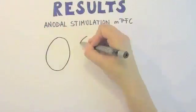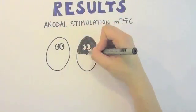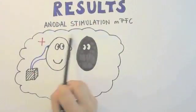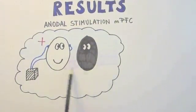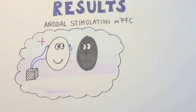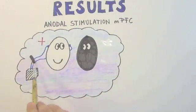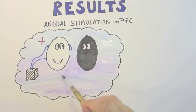So what was the result? We found that anodal stimulation of the medial prefrontal cortex significantly reduced implicit bias. Because this type of stimulation leads to an increase of cortical excitability, it seems that under normal circumstances, the medial prefrontal cortex is responsible for controlling implicit bias attitudes.